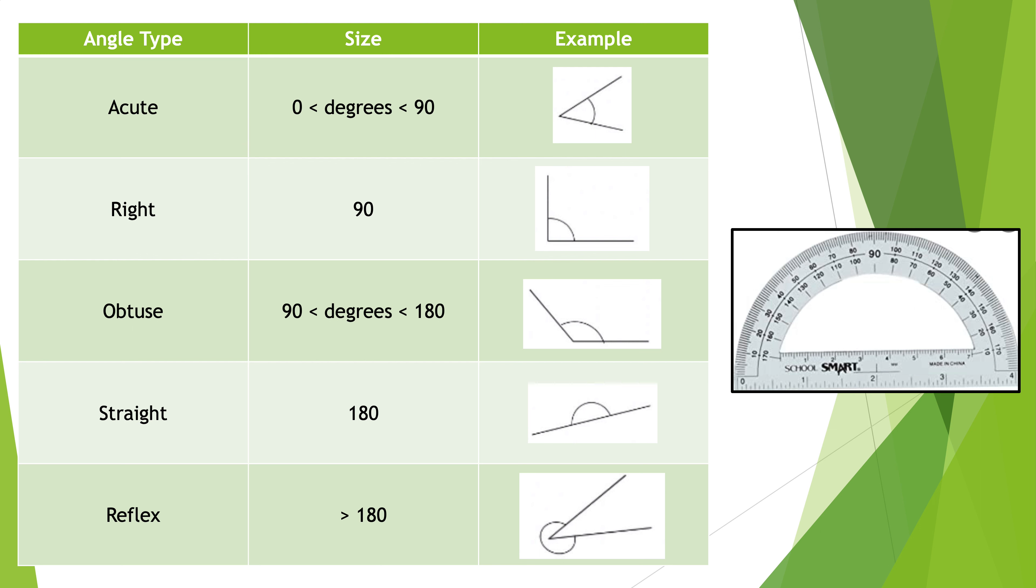I'm sure you saw a protractor when you were young and in school. An acute angle is an angle between zero and 90 degrees. I like to joke and call it an Italian angle because it's a cute little angle. It's between zero and 90 degrees.